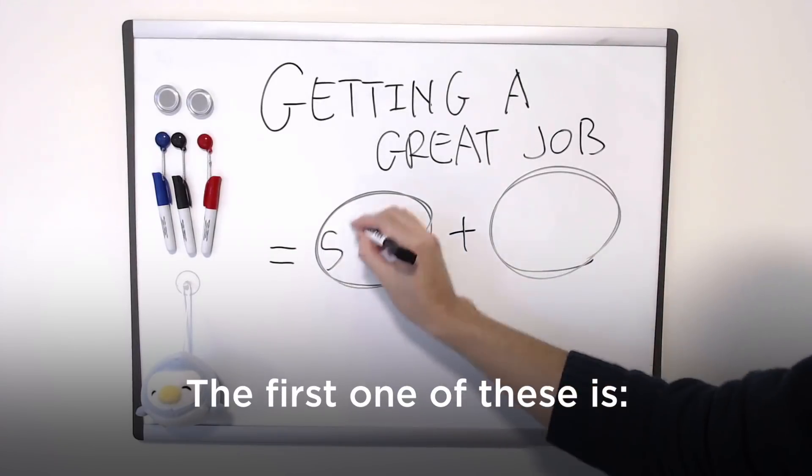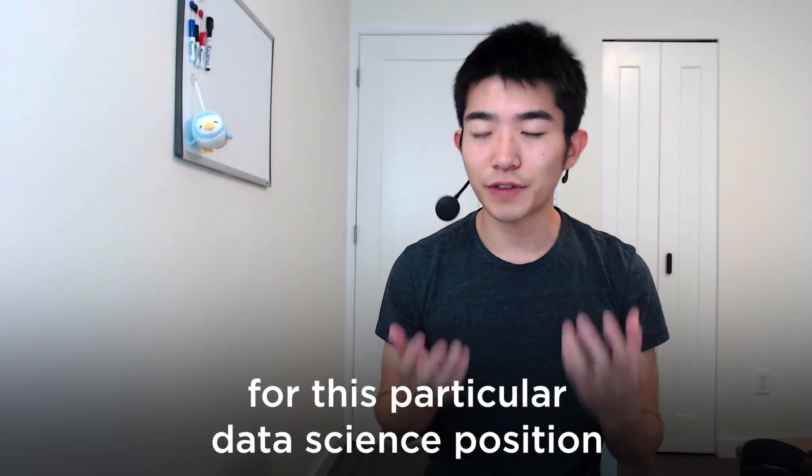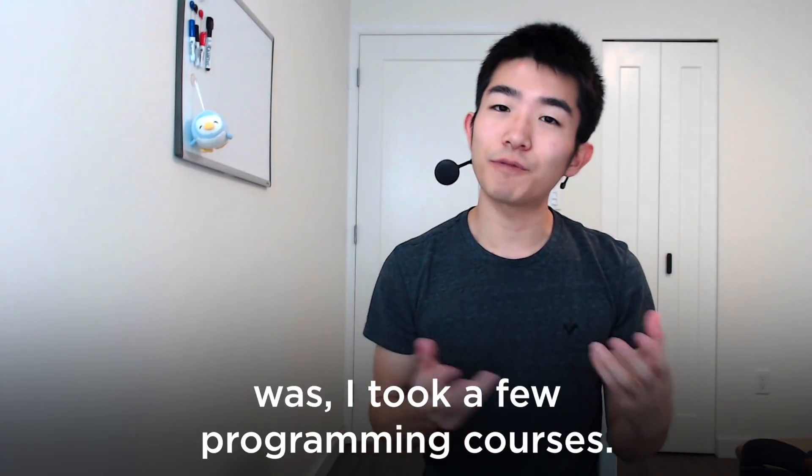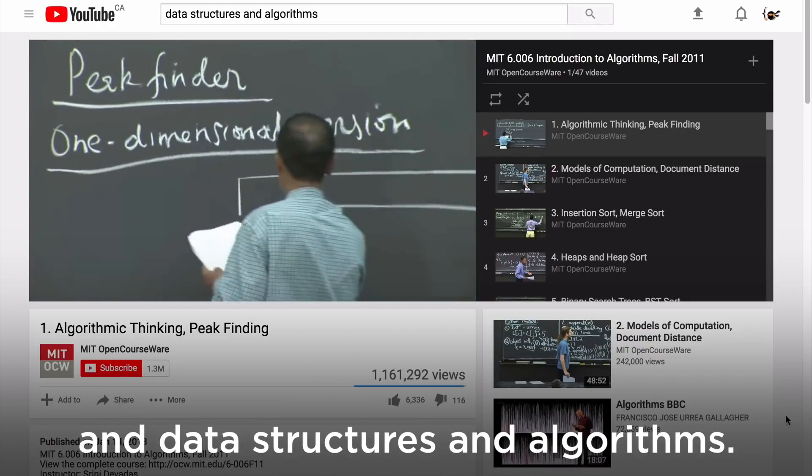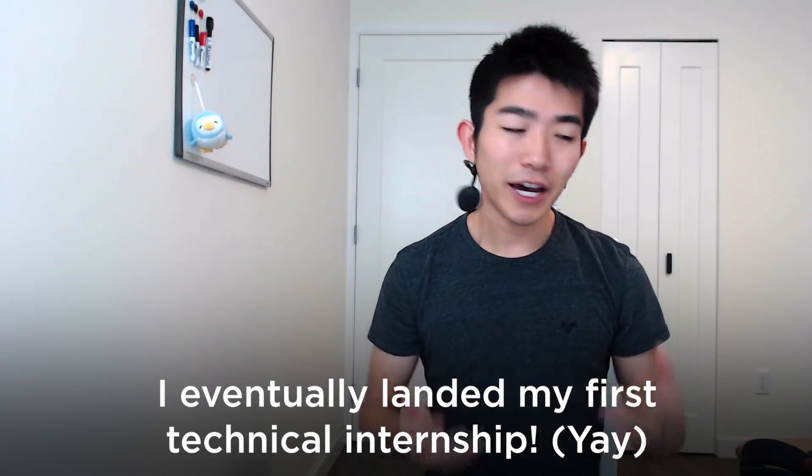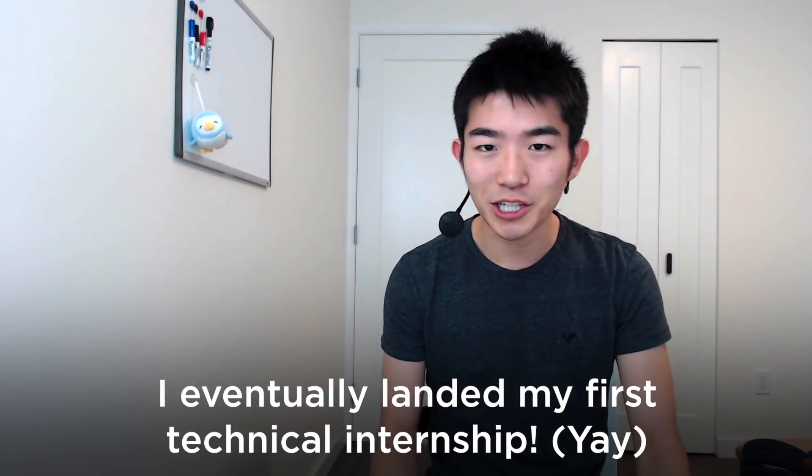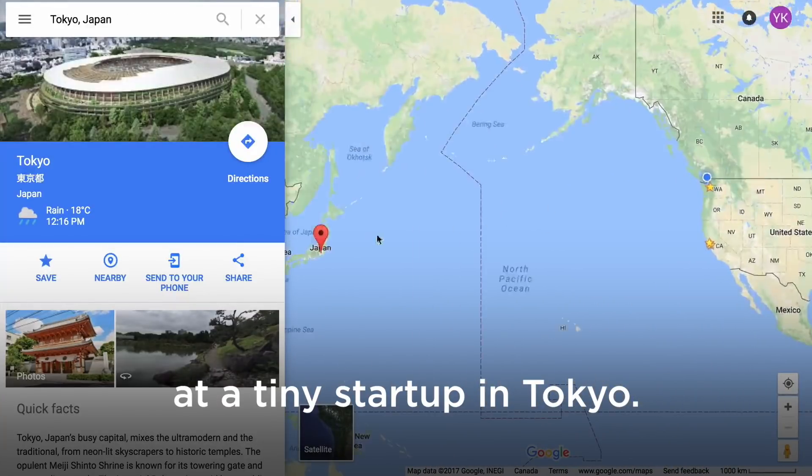The first one of these is skills. The first thing I did for building my skill set for this particular data science position was I took a few programming courses. They were on basic programming and data structures and algorithms. Using what I learned in those courses, I eventually landed my first technical internship. That one was as a software developer intern at a tiny startup in Tokyo.